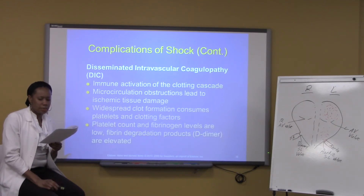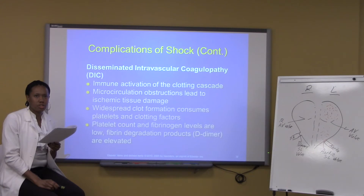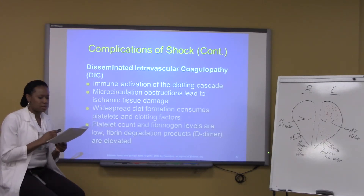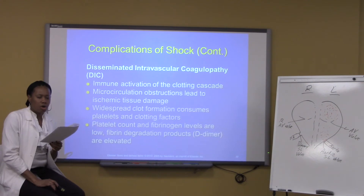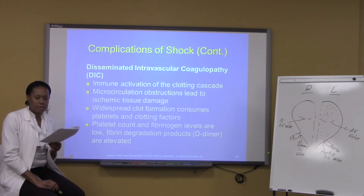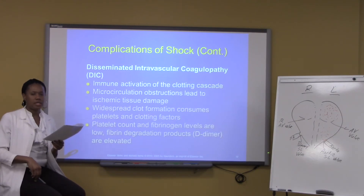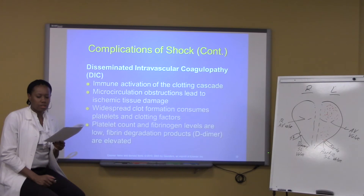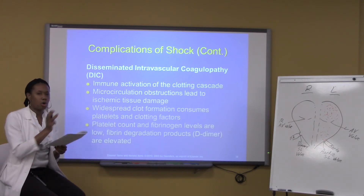Clinical findings for DIC include ischemia to the fingers and toes with pain, and bleeding. Causes of DIC include certain cancers, trauma, burns, bacterial infections, and viral infections.